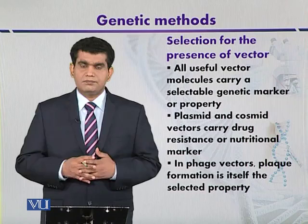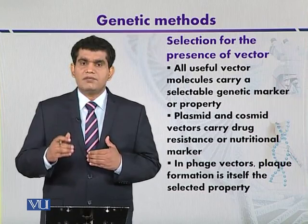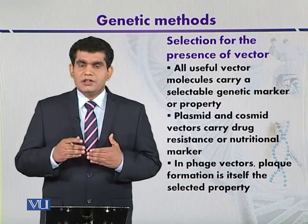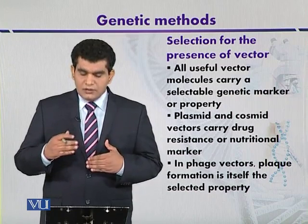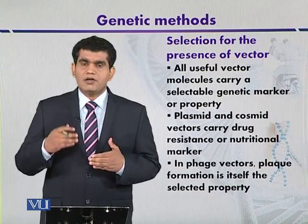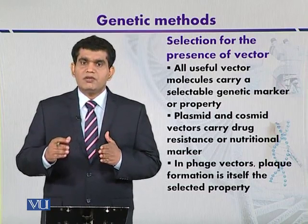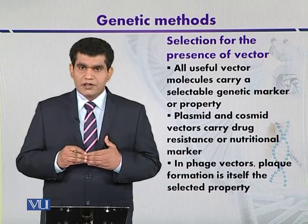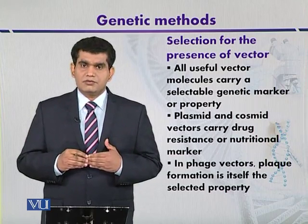While discussing different types of cloning vectors, their detection was based on different methods. As far as selection for the presence of vector is concerned, different microbiological methods can be used in combination with genetic methods, because when we cultivate microbes that contain our recombinant vector, it can be detected using different selective media.